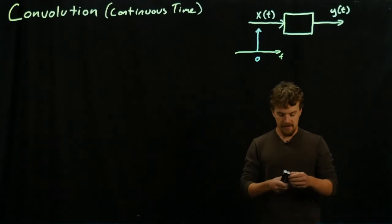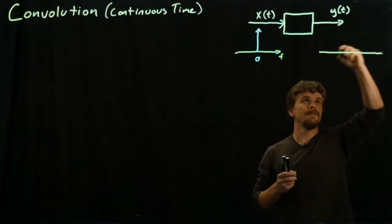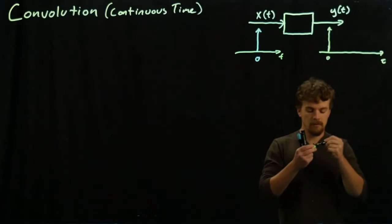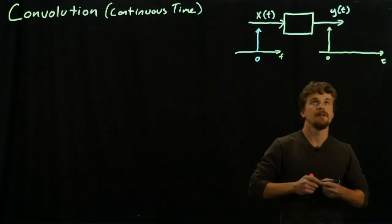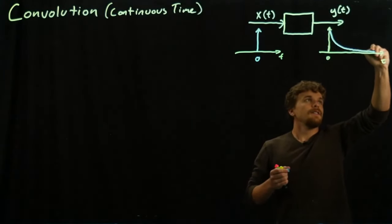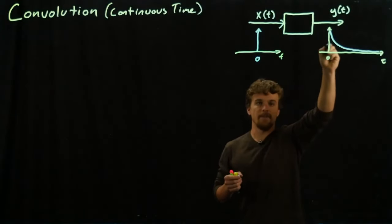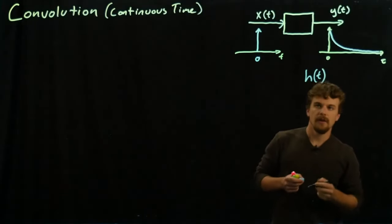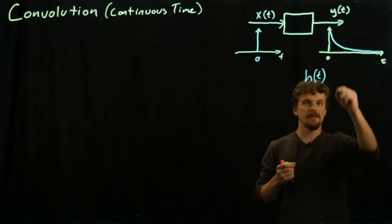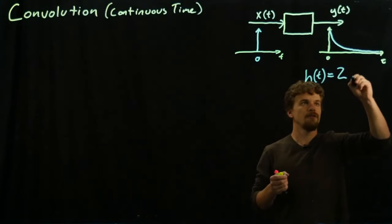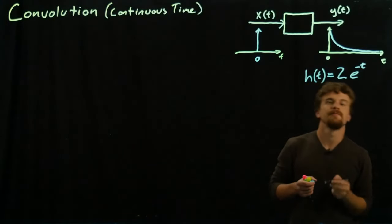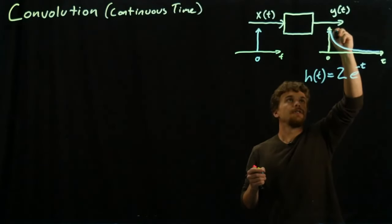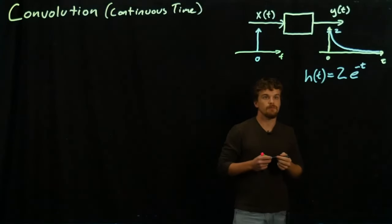Let's say we know what this system outputs for an impulse. This is what we'd call the impulse response — we put an impulse in, and this is the response we get; it's usually denoted h(t). I'm picking this arbitrarily: suppose this system outputs h(t) = 2 times e to the negative t for an impulse. That's actually a practical impulse response we see from some systems — it would start at 2 and exponentially die down.